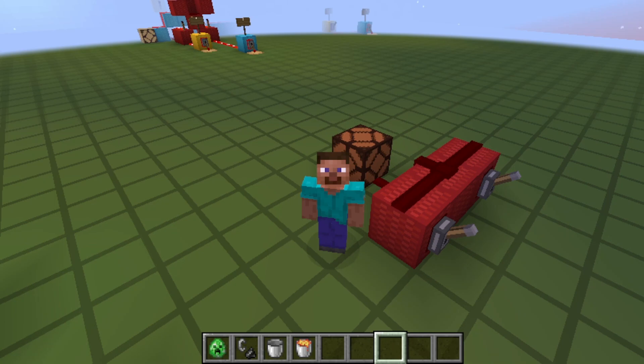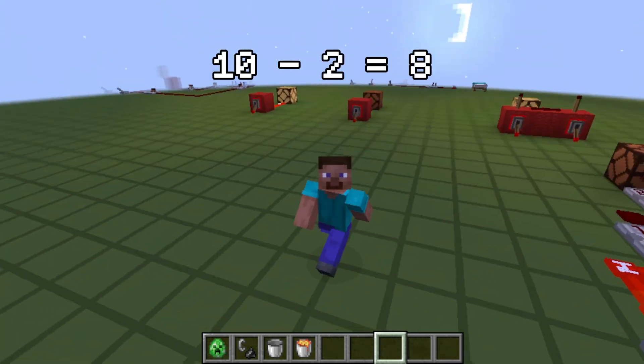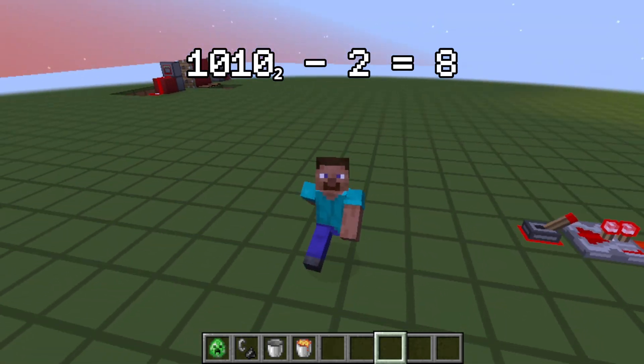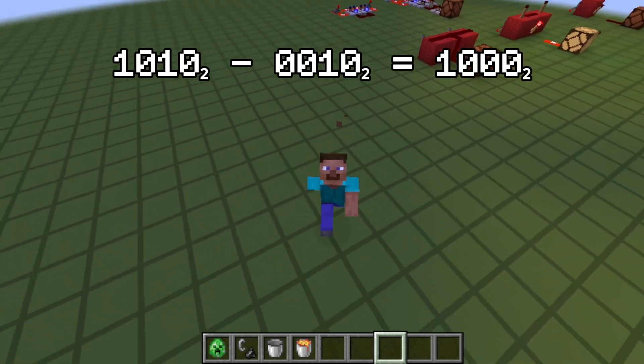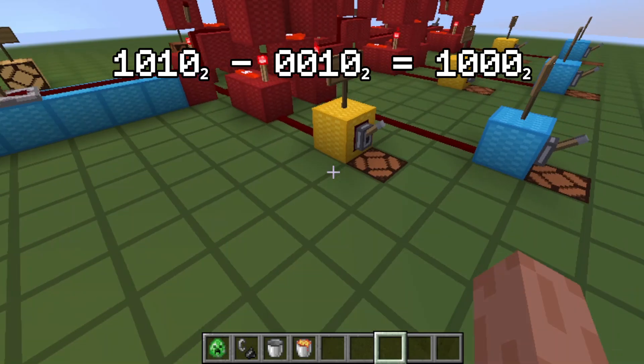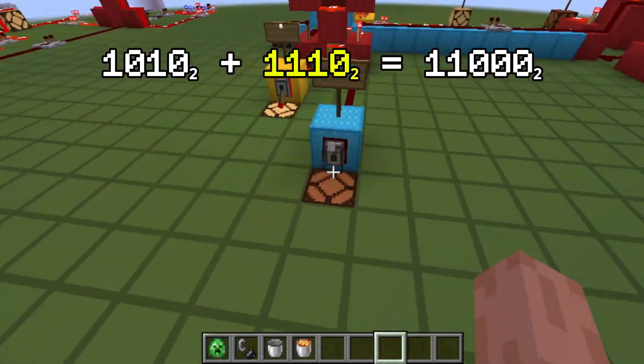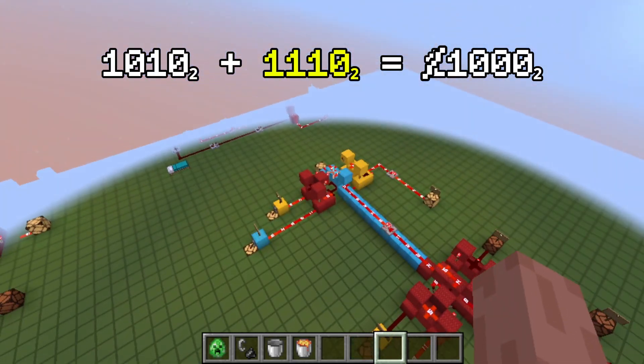For example, 10 minus 2, that's 1010 minus 0010. The result should be 1000. We can do the same thing by just adding 1010 and 1110. Ignoring the overflow bit, we get 8.